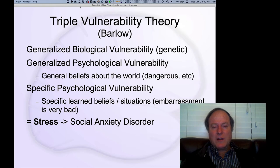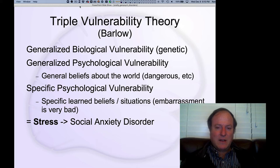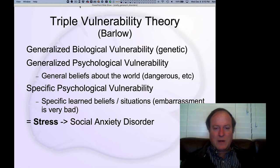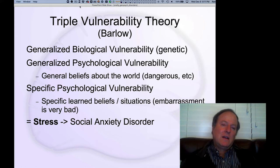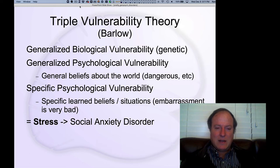A more elaborated version of the diathesis-stress model is due to Barlow, known as the triple vulnerability theory. This divides vulnerability into two components: one being the genetic, the other being the psychological vulnerability — an emphasis on patterns of belief and thought that make you more or less susceptible to stress effects. These environmental effects are also described here as a specific psychological vulnerability, something very specific to a particular context.